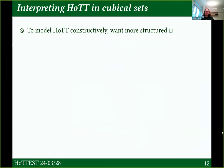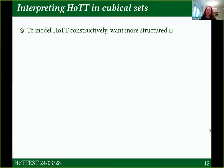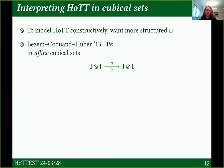That's in those minimal cubical sets. Now to model HoTT constructively, we actually want more structured cube categories — with more morphisms than the ones in minimal cubes. Going through the historical record, we start with the Bezem-Coquand-Huber model of homotopy type theory in cubical sets: one paper in 2013 covering most of it, and in 2019 covering the univalence axiom, which is the important bit. This is in affine cubical sets.